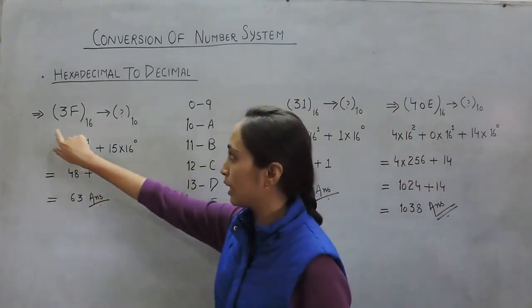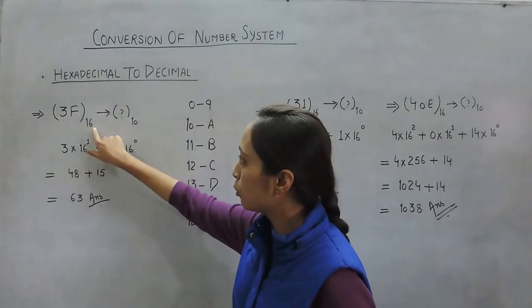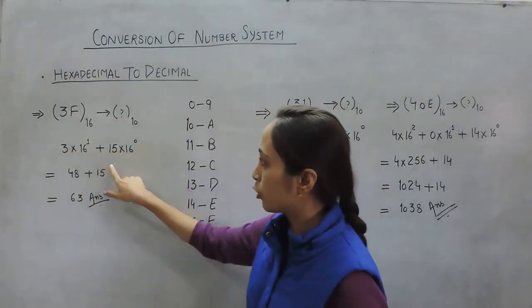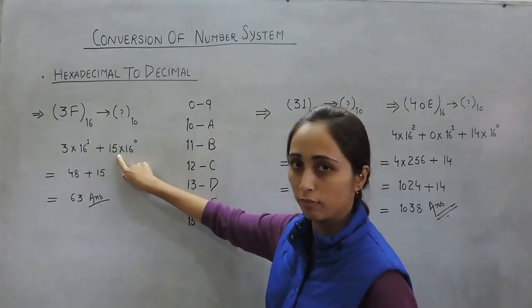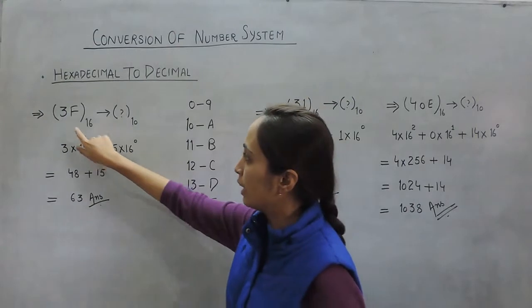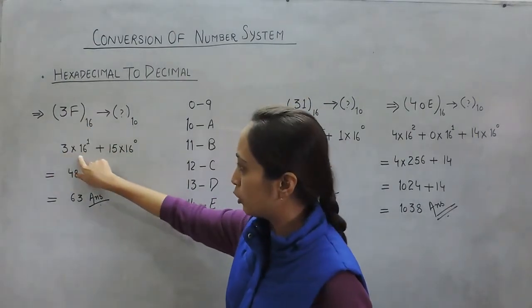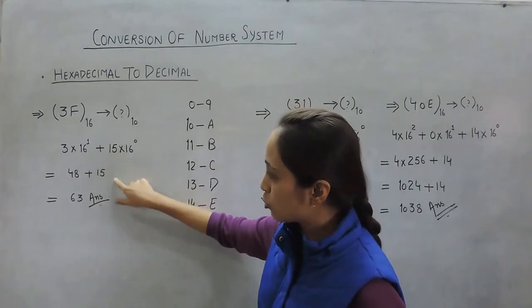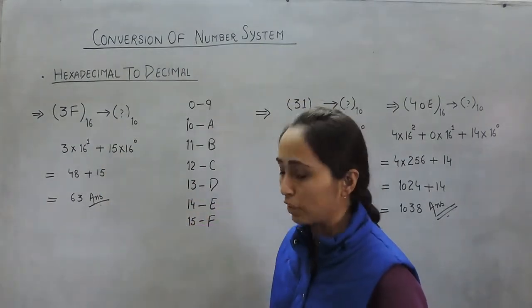Let's move to the first example, 3F. We need to convert it into a decimal number. Here F corresponds to 15. We multiply it with 16 to the power 0, then 3 by 16 to the power 1. We add these while solving, and we get the answer 63.